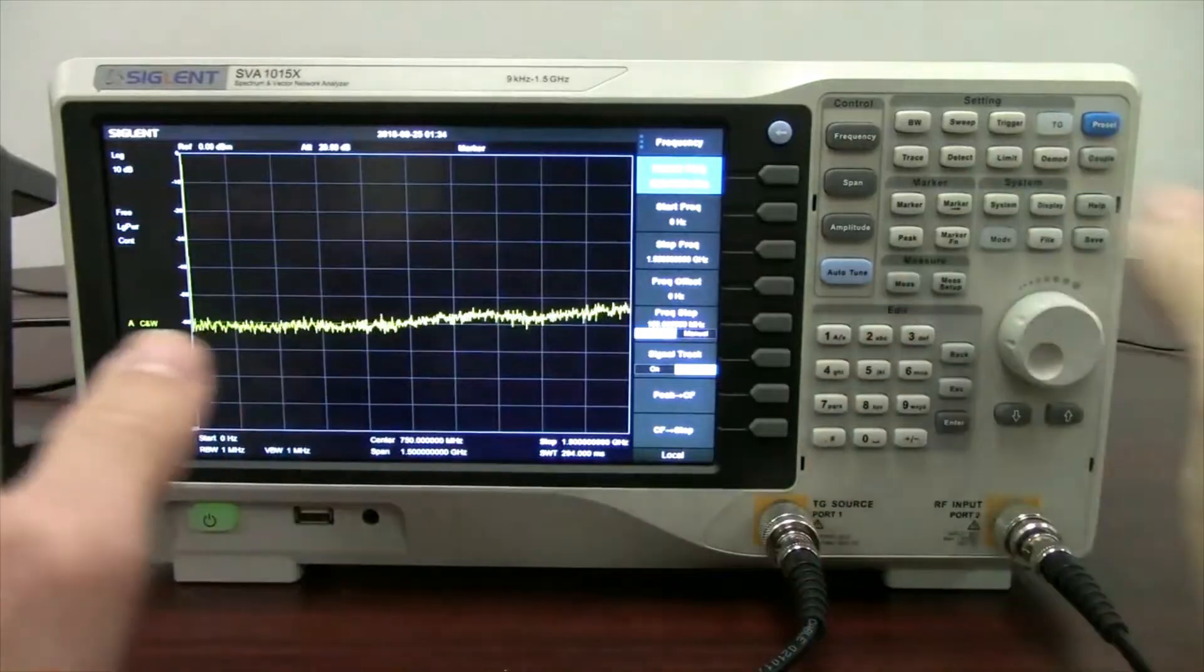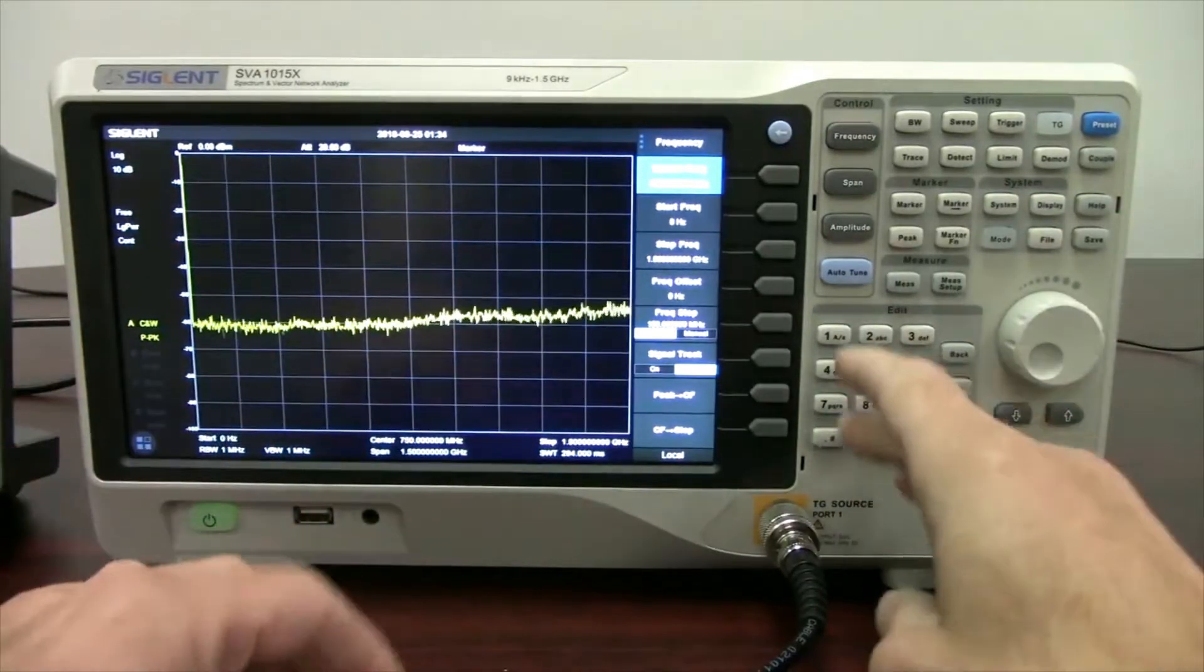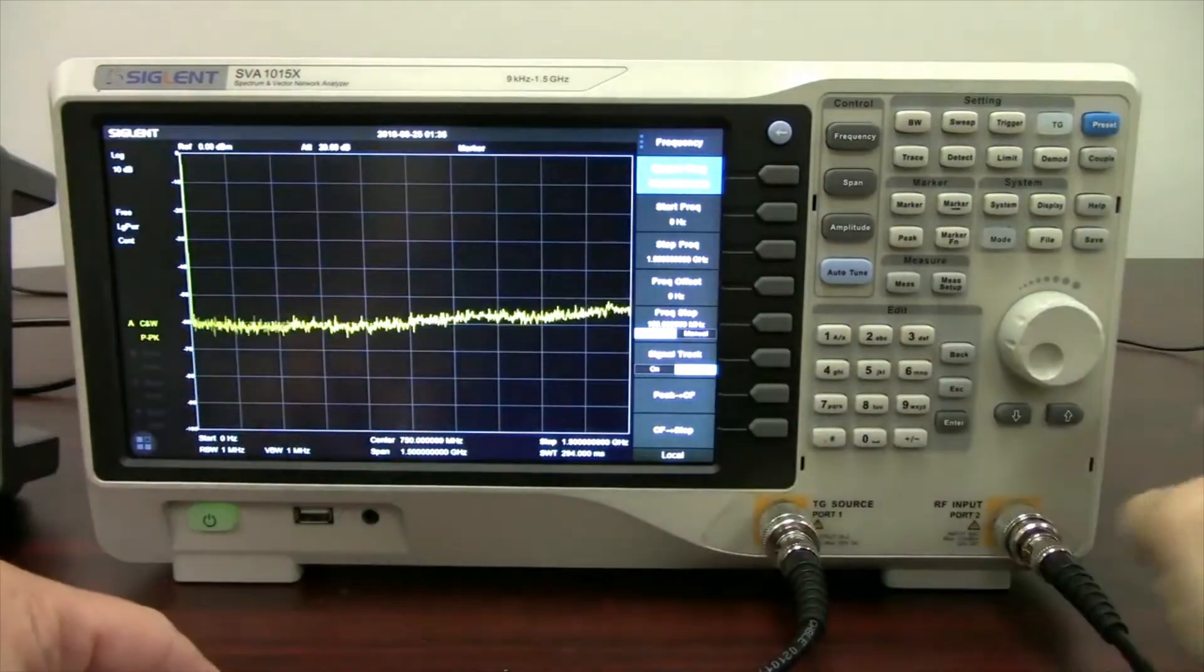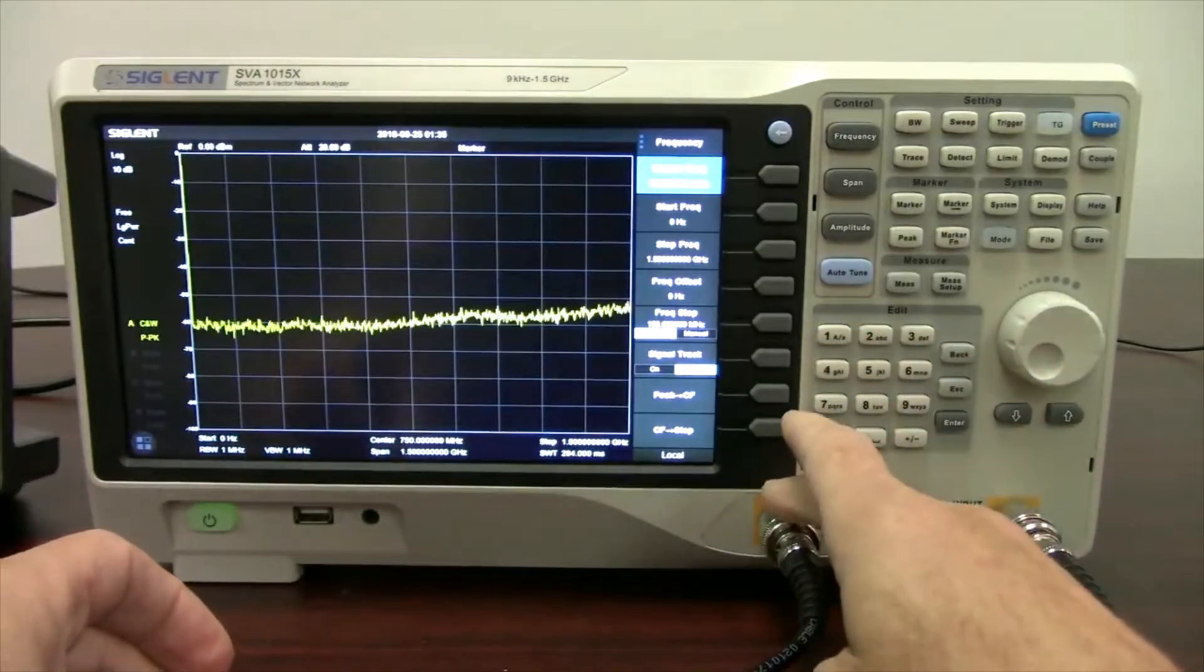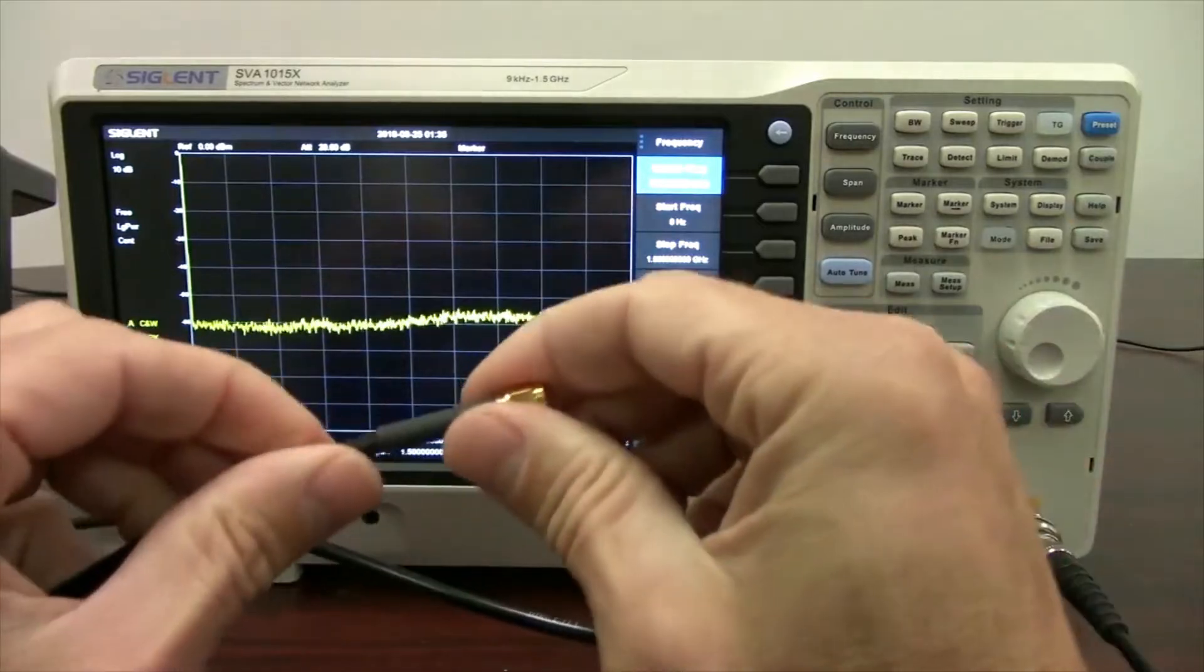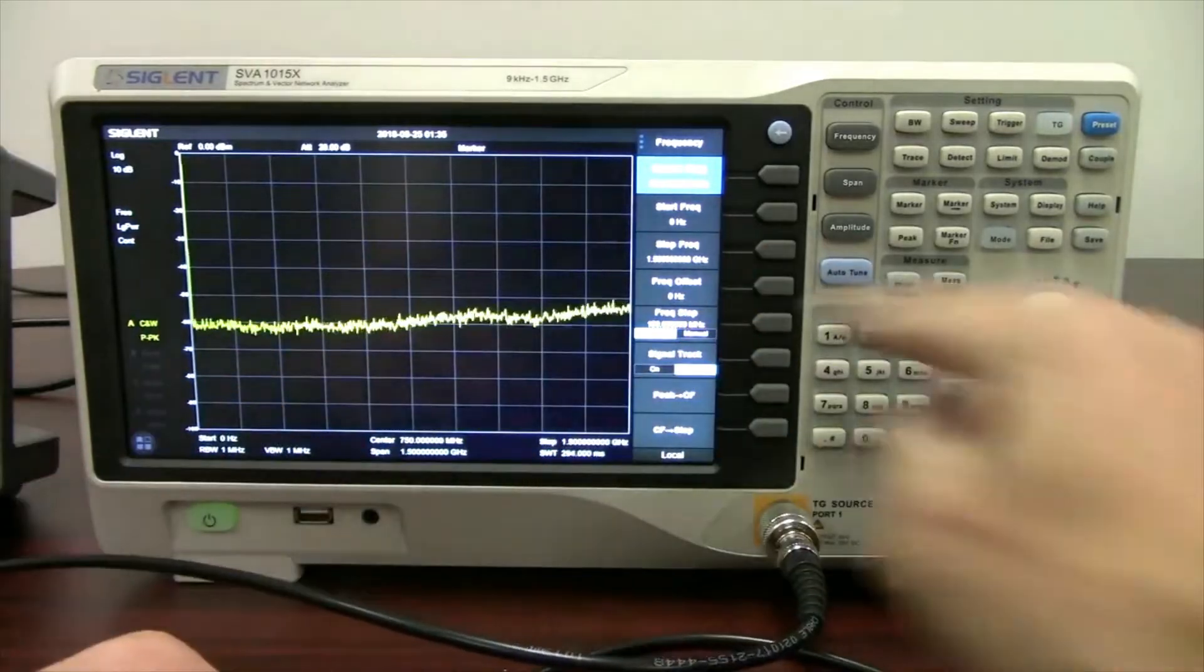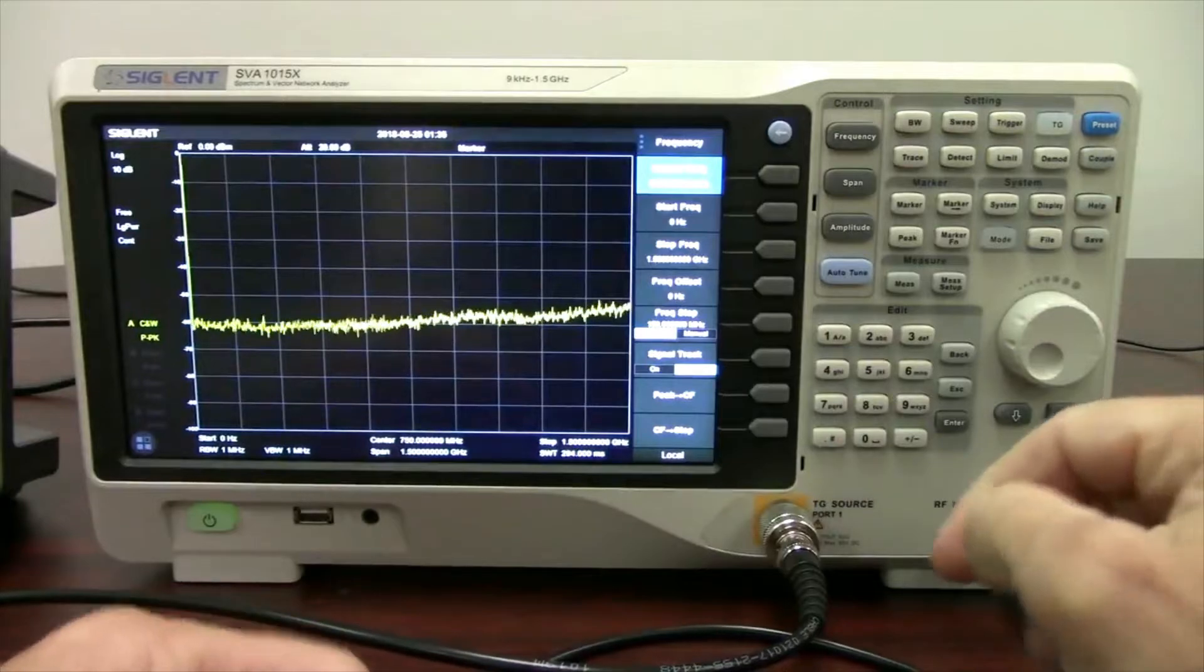And so how we're going to do that, if you're not aware of the way that the spectrum analyzer works, we've got a tracking generator output here connected to an adapter and a cable that terminates in an SMA and then we have an RF input over here. So this tracking generator signal is going to be output through this port, through this cable, and then it's going to go through our attenuator. We're going to then measure it with this port, the RF port, and we're going to look at the output on the front panel of the display here.